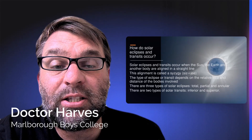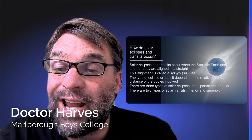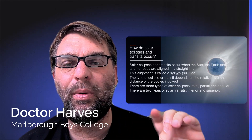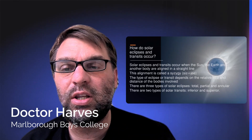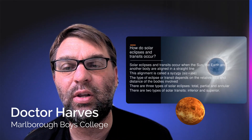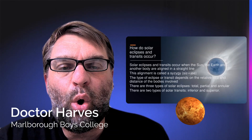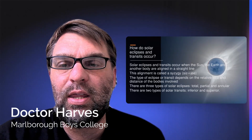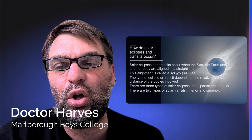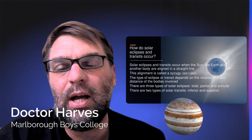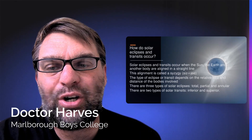There are two types of solar transits: inferior and superior. An inferior transit occurs when the object is orbiting at a distance closer to the Sun than the Earth — for example, a solar transit of Venus, because Venus orbits closer to the Sun. A superior transit is where the orbit of that object is further away from the Sun than the Earth — for example, a transit of Jupiter.